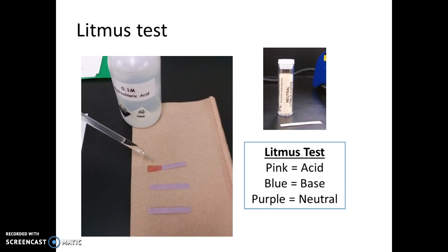To interpret your litmus test results: if the paper turns pink, the solution is acidic; if it turns blue, the solution is basic; and if it stays purple, the solution is neutral. When you've recorded the color responses, you can throw away the used strips of litmus paper in the regular trash.